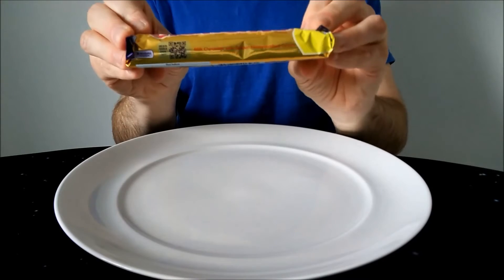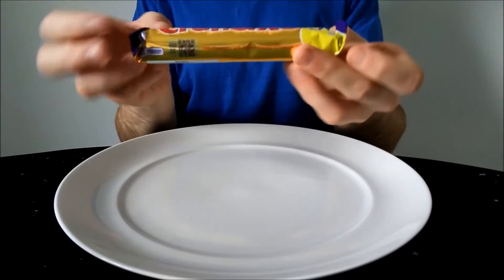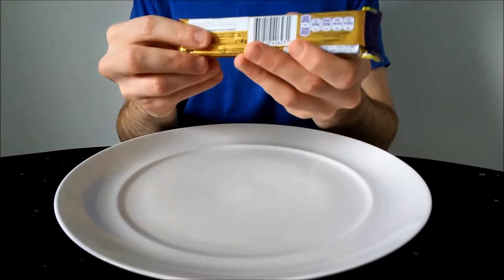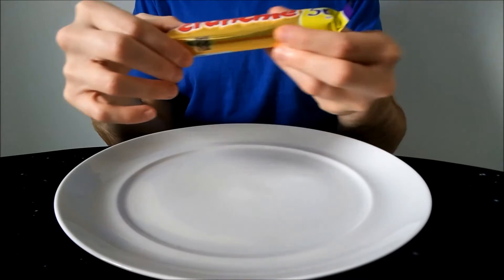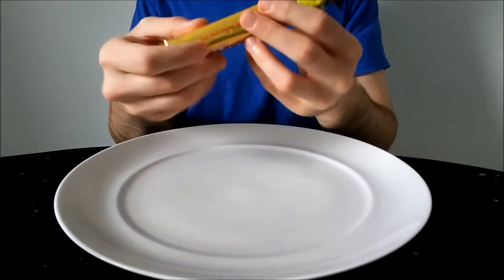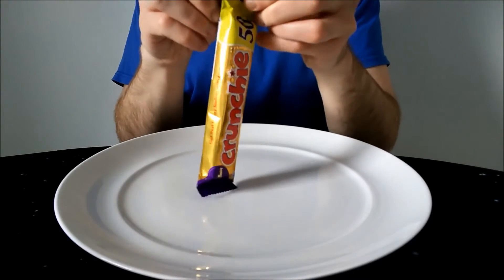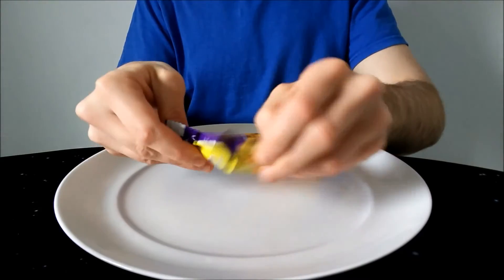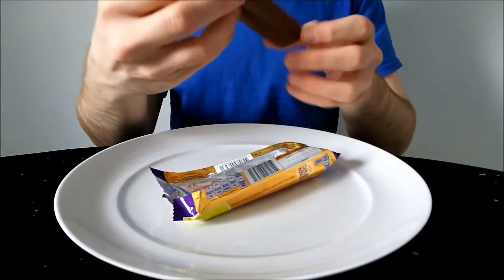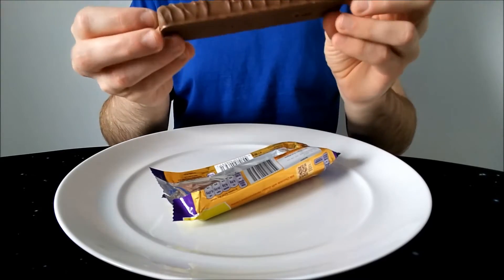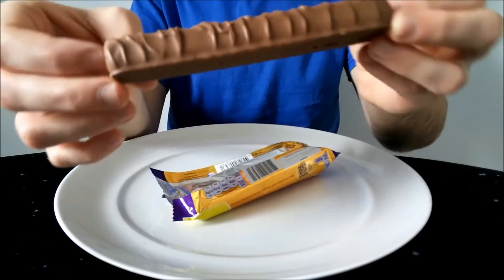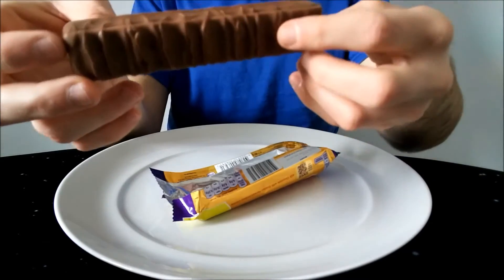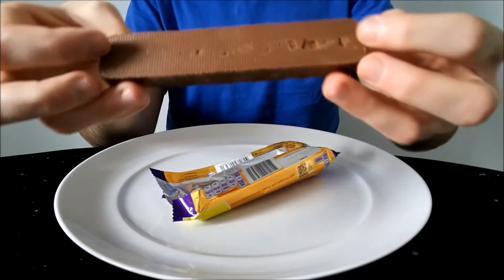Let's have a look. It feels a bit ribbed as I do that. I don't remember crunchies being like that. Reasonably warm day today, so I hope it won't be too melty. I don't remember crunchies being like that. I could be wrong, I could be misremembering them. But you can see the ribs. I remember them being just a block.